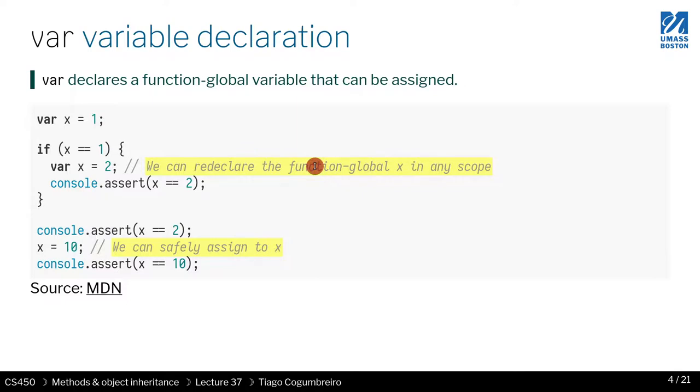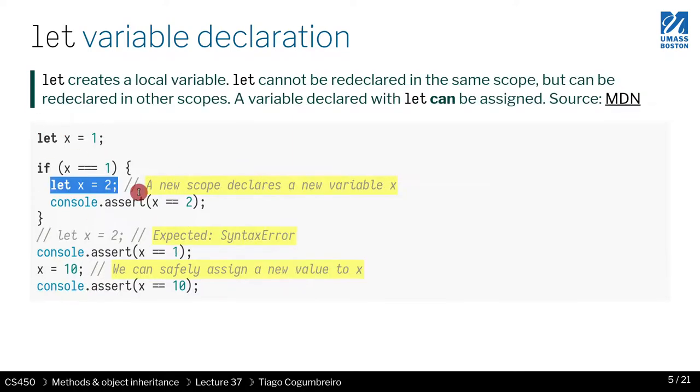Whereas this one is not. They're all global with respect to the functions, whereas with let, it won't be. So if you redefine x to be 2, then x is 2, so this works.